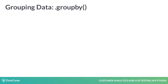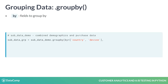We can call the GroupBy method on a data frame to specify groups to aggregate over. Here we will use it on our combined demographics and purchased data dataset. The primary argument is By, to which we want to provide a list of data frame fields that we want to group on. The potentially relevant fields are country, device, gender, and age.